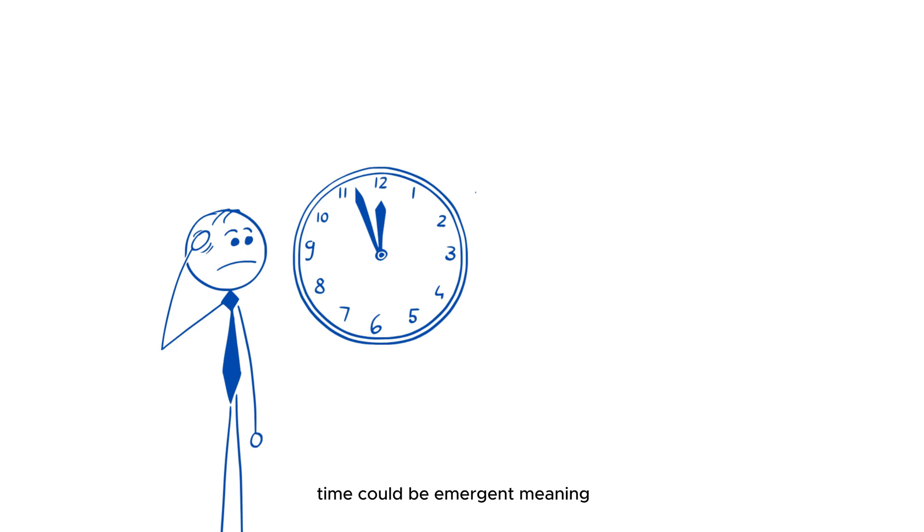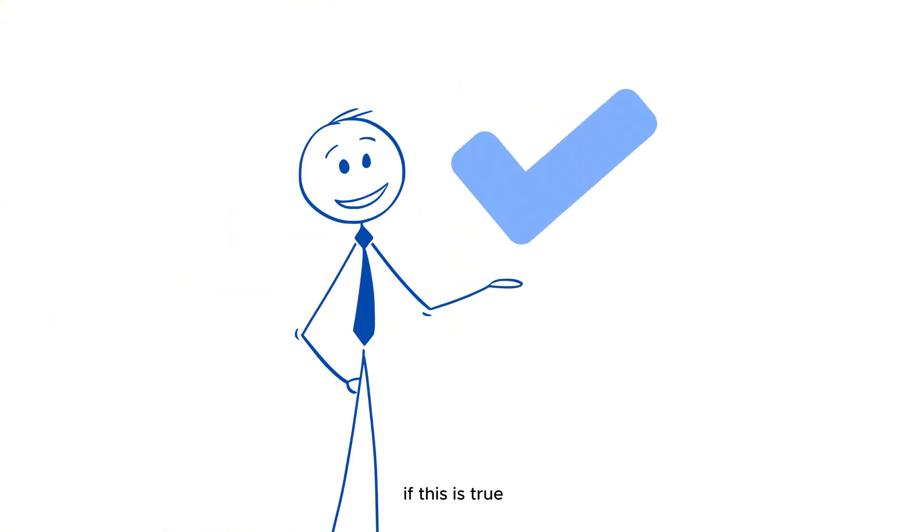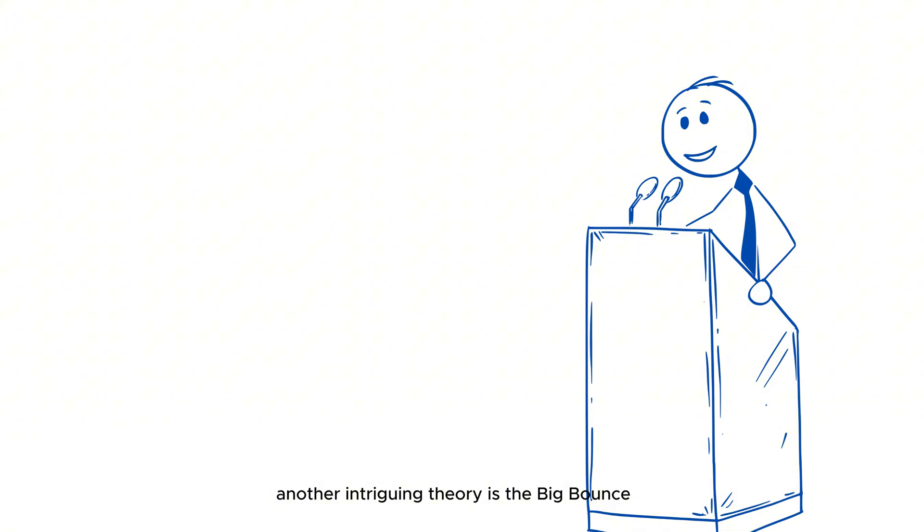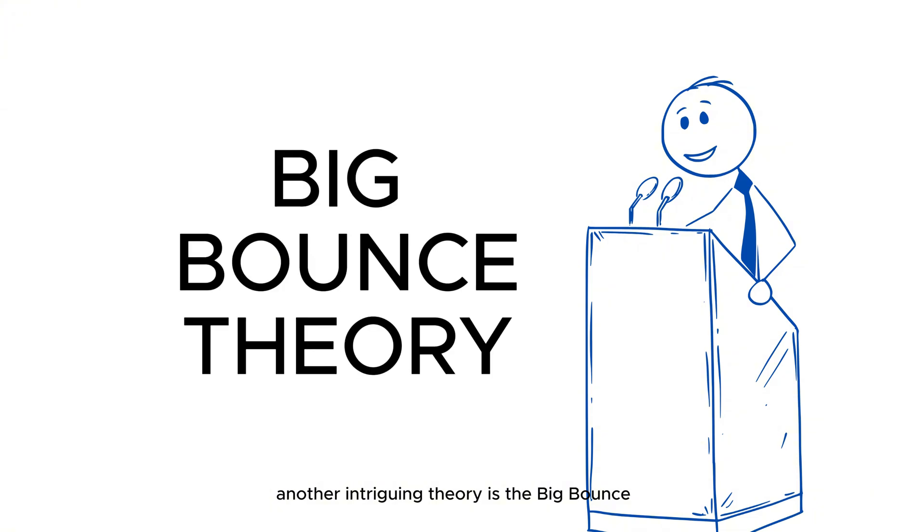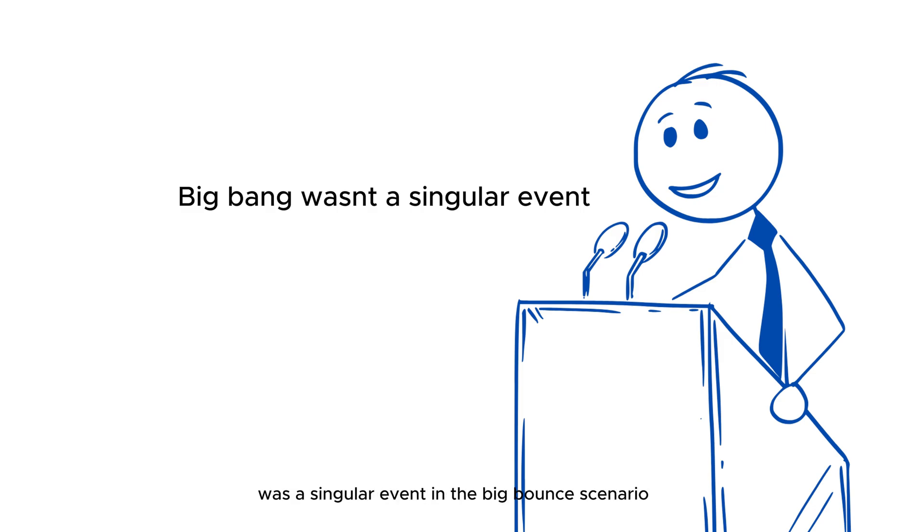Time could be emergent, meaning it only becomes meaningful after certain quantum processes take place. If this is true, then the concept of a before the Big Bang might not just be wrong, it might be irrelevant. Another intriguing theory is the Big Bounce, which challenges the idea that the Big Bang was a singular event.